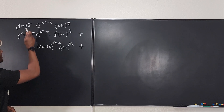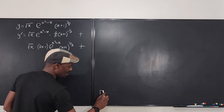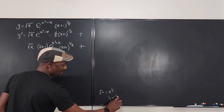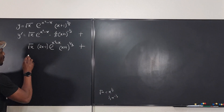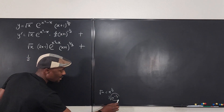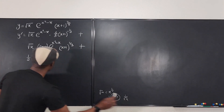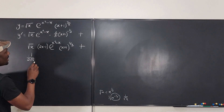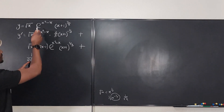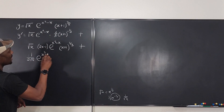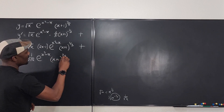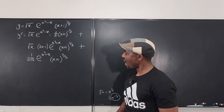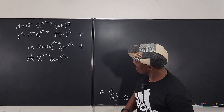If we differentiate the square root of x — remember that square root of x is x to the one half — we get one half x to the negative one half, which can be written as one over two square root of x. That's the part we differentiate, and then we keep the rest: e to the x squared minus x, and x plus one to the two-thirds. These are the three portions of your differentiation.